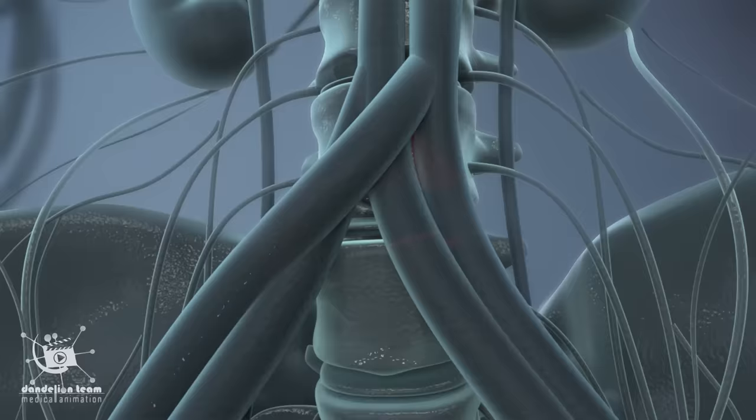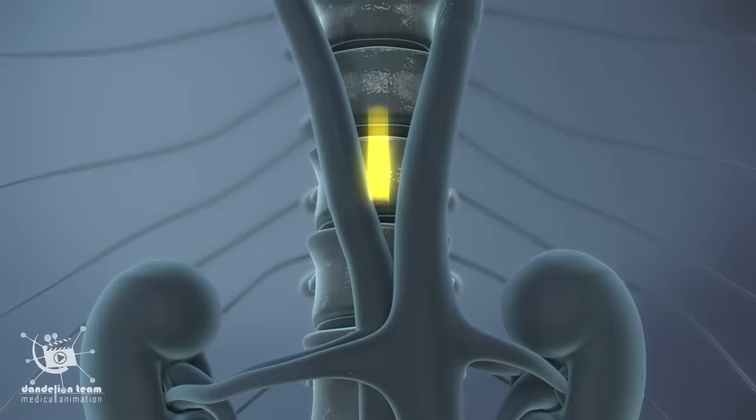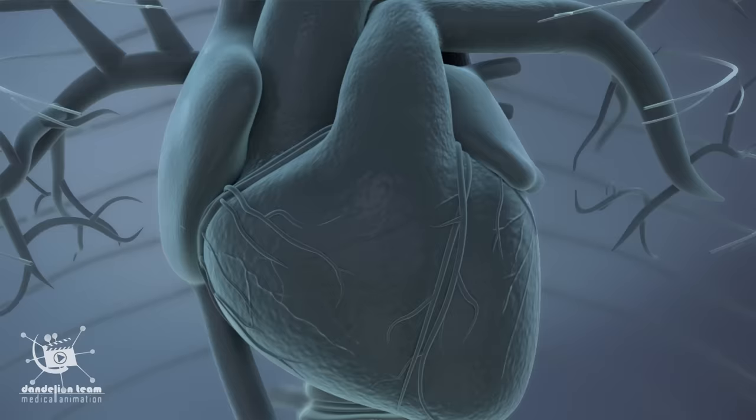Ejaculation is a reflex action controlled by the central nervous system. It is triggered when the sexual act reaches a critical level of excitement.